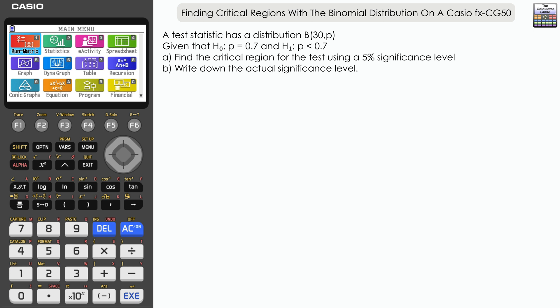Find the critical region for the test using a 5% significance level and then write down the actual significance level.